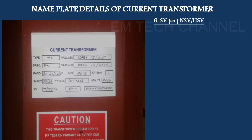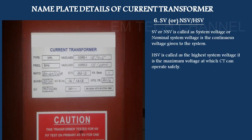SV is the system voltage. The nameplate will give the SV value. For example, 33 kV — the system is a 33 kV system. The CT is marked as 36 kV highest system voltage (HSV), which means the system normal voltage is 33 kV but the maximum continuous voltage it can withstand is 36 kV.